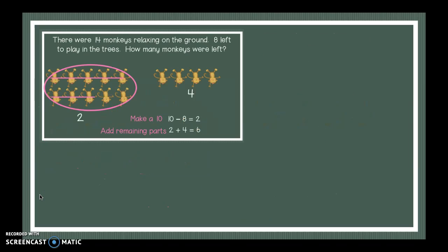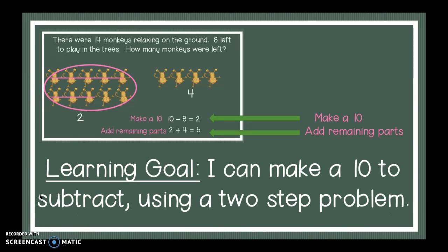Now I just showed you how I subtracted by making a 10 and then adding the two parts. That's what our learning goal says we're going to do today. Our learning goal says I can make a 10 to subtract using a two-step problem. We're going to make a 10, make a number sentence that goes along with the 10 that we just made, and then add the remaining parts. And we're going to make another number sentence to show that adding. Here we go.